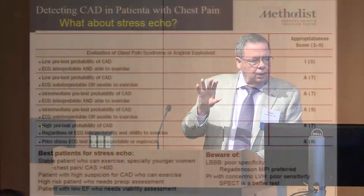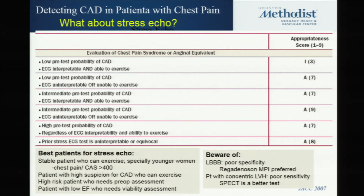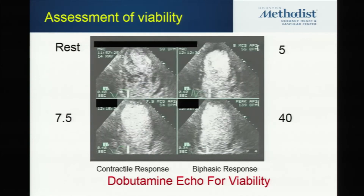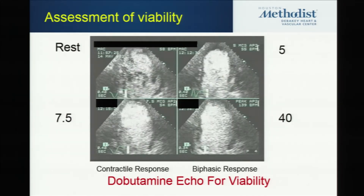Pharmacologic imaging is very good for patients who cannot exercise — dobutamine for echo and regadenosone for nuclear. Exercise should always be preferred — do not order dobutamine or regadenosone if the patient can exercise. Dobutamine should be deferred for those who cannot exercise or for preoperative risk assessment and low ejection fraction patients. Stress echo is approved for evaluation of chest pain syndrome, high suspicion of CAD, high-risk patients needing preoperative assessment, and low EF patients for assessment of viability. Beware of left bundle branch block — better go to regadenosone nuclear. With concentric LVH, dobutamine stress echo has poor sensitivity, so you may prefer exercise or regadenosone.